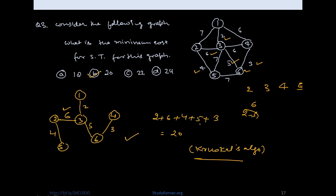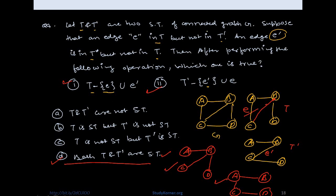For weight 7, there are three choices: 1-2, 3-5, and 5-6 — but all form cycles, so none can be added. The minimum cost spanning tree is the sum: 2 + 6 + 4 + 5 + 3 = 20, so option B is correct.